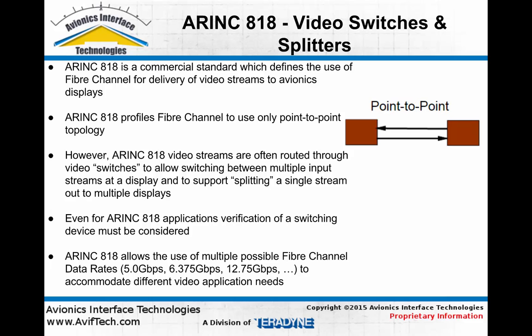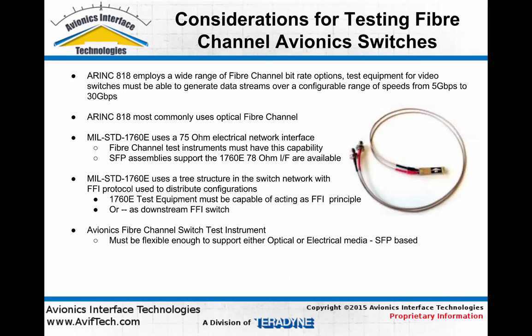A unique element of ARINC 818 is that it allows for multiple possible fiber channel data rates to accommodate different video application needs. Considering these adaptations — ARINC 818 and HS-1760 — key test considerations include: the wide range of possible network bit rates for ARINC 818, support for the fast fabric initialization protocol for HS-1760 weapons buses, and since ARINC 818 uses optical interfaces while HS-1760 uses 75-ohm electrical interfaces, a test design must provide flexible options for physical media interfaces.